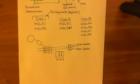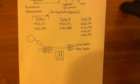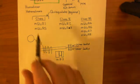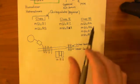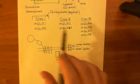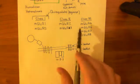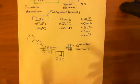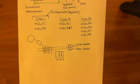Welcome back. We are just about to discuss heterotrimeric G proteins, and of all these classes of metabotropic glutamate receptors, we'd like to know which ones are coupled to which heterotrimeric G proteins.